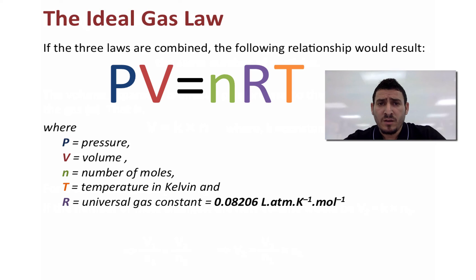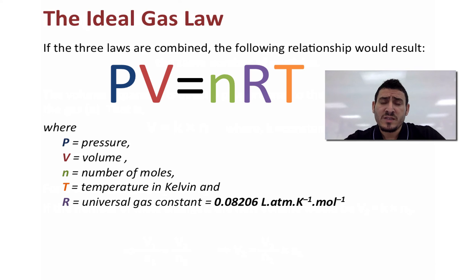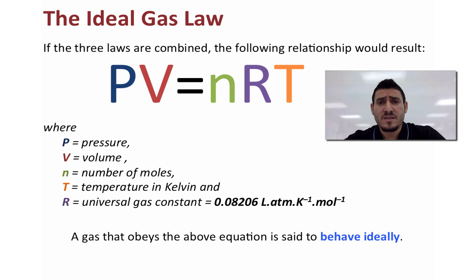When all three laws are combined, the following relationship results: PV equals NRT. P is the pressure, V is the volume of the gas, N is the number of moles, and T is the Kelvin temperature. R is the universal gas constant equal to 0.08206 liter·atmosphere per Kelvin·mole. A gas that obeys this equation is said to behave ideally — this is the ideal gas law.